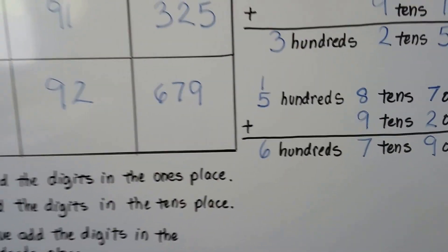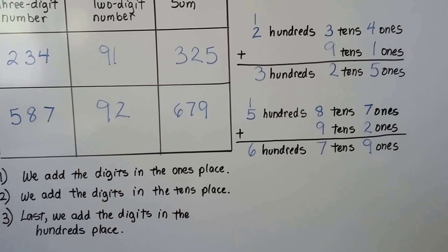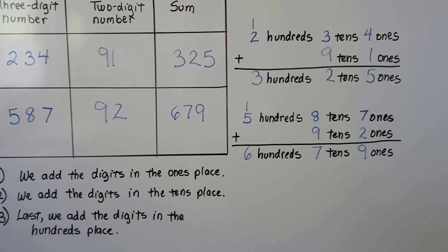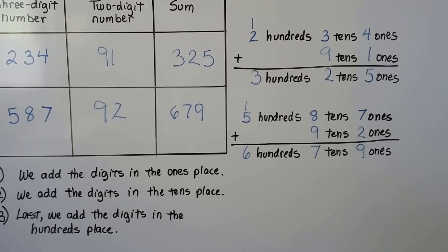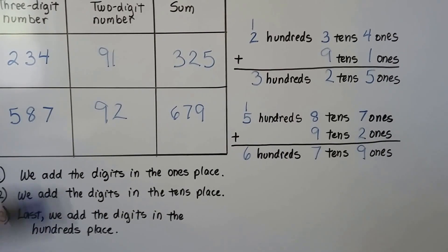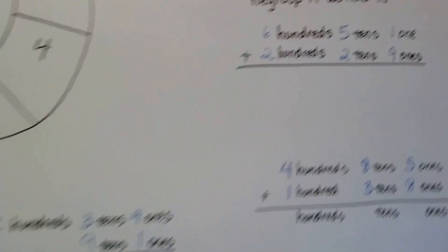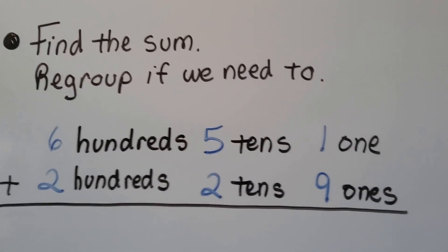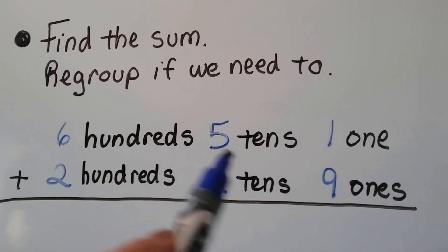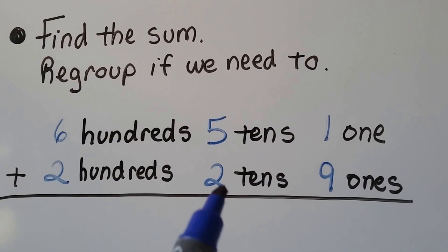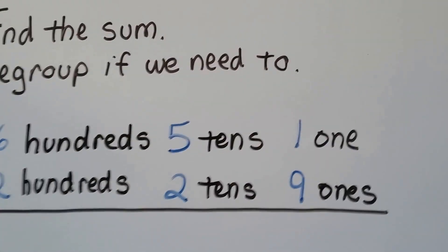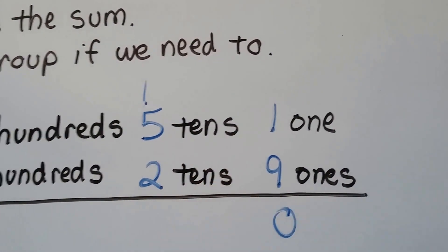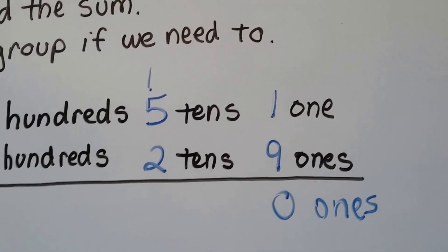You can play a game like this — use number cubes to roll to get your two-digit number, or use a deck of playing cards using the smaller cards under nine so you don't get too big a number. Let's see if we can find the sum and regroup if we need to. We have six hundreds, five tens, and one one, and we're going to add two hundreds, two tens, and nine ones. The ones place: nine plus one is ten, so we have to regroup. We put the one up here and the zero down here — we have zero ones.